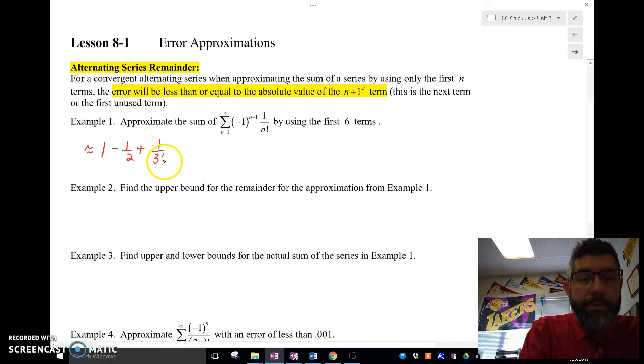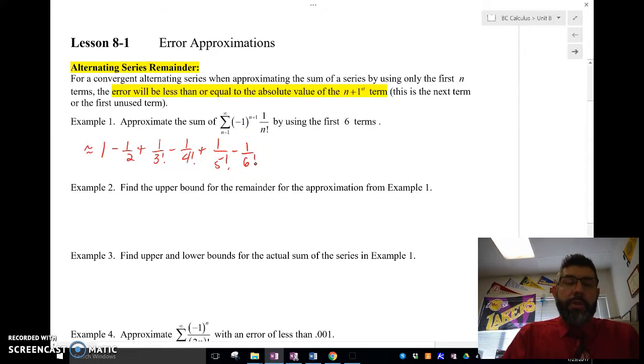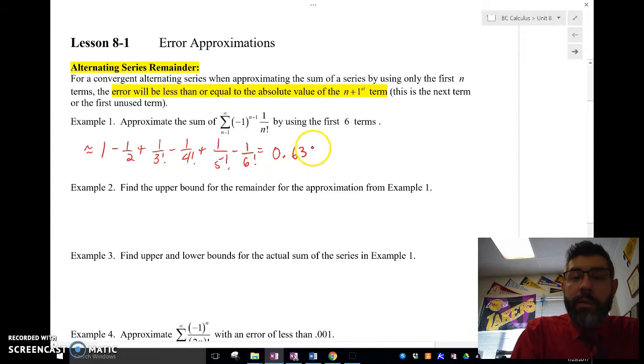minus 1 over 4 factorial, plus 1 over 5 factorial, minus 1 over 6 factorial. So then what I'm going to do is I'm going to plug this here in a calculator to calculate that out,